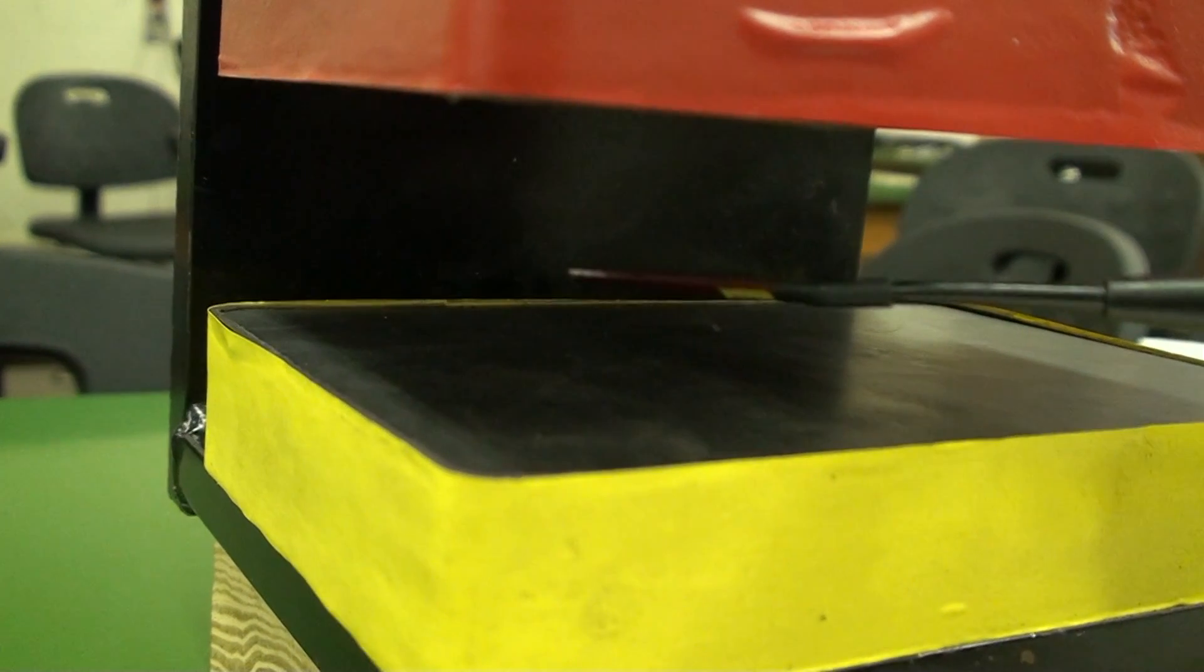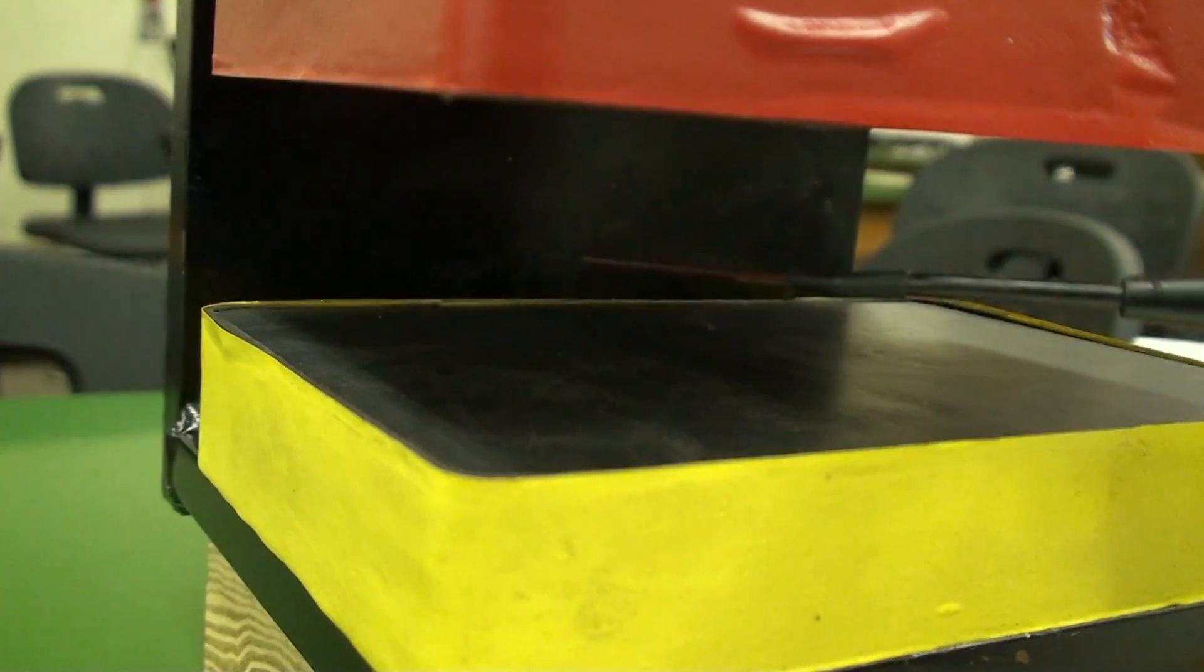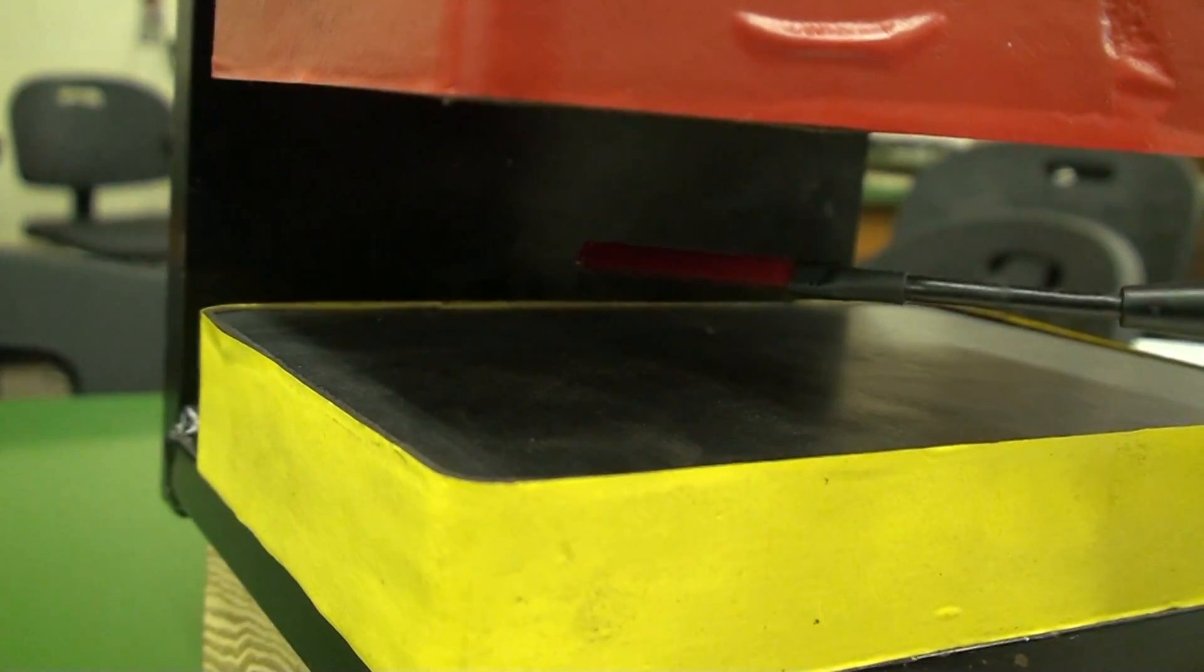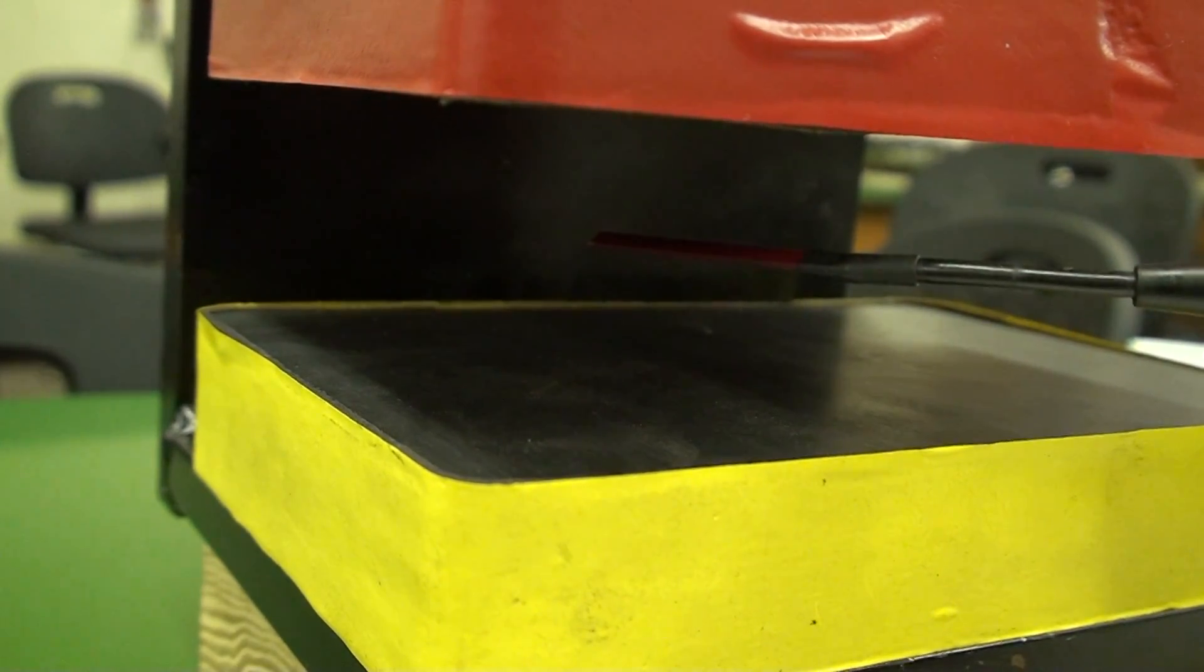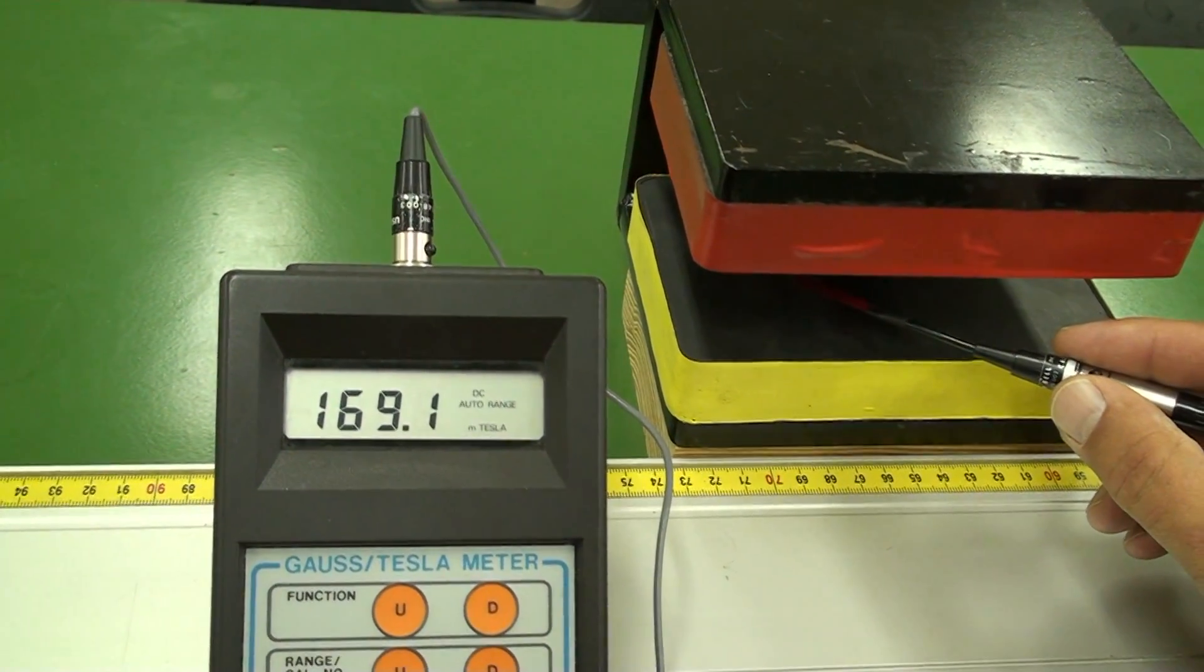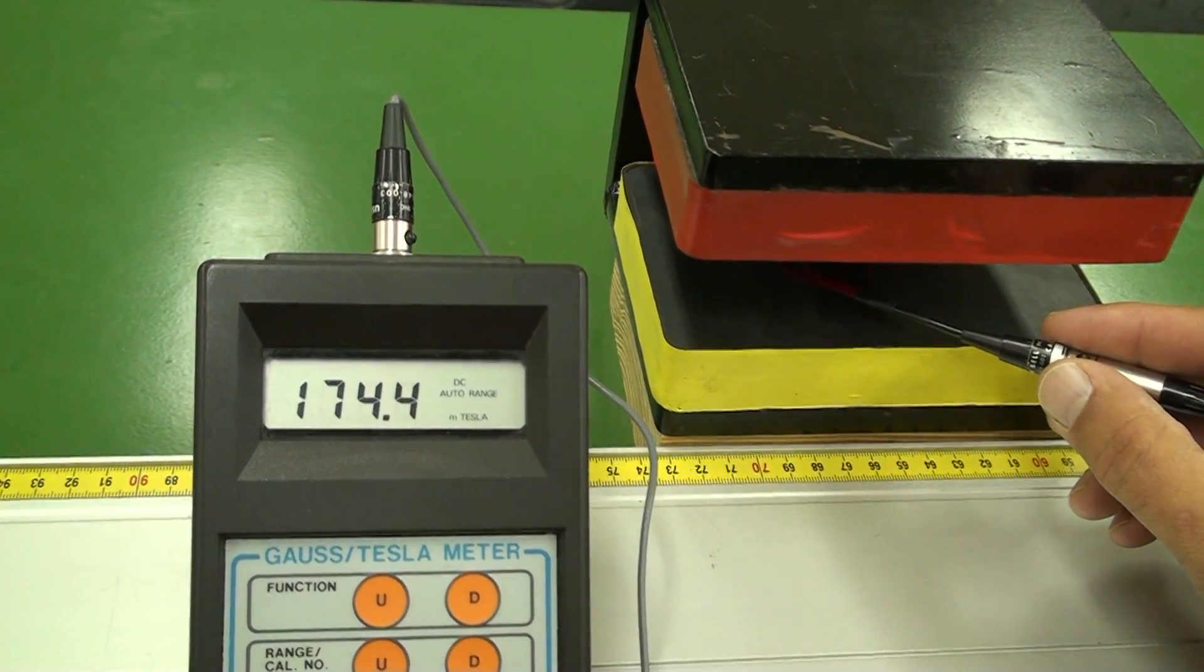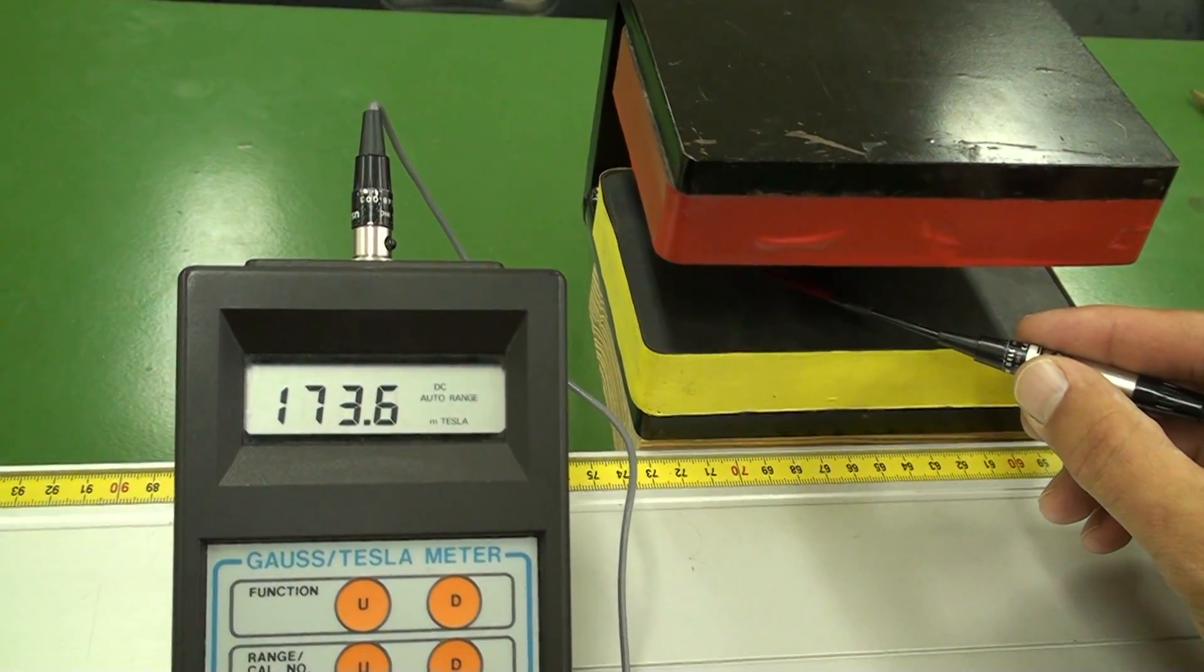Measure B by inserting the Gauss meter probe with the vertical B field perpendicular to the flat surface of the probe. Rock the probe slightly to find the maximum reading. Here you see the displayed reading change until we have the B field perpendicular to the probe.